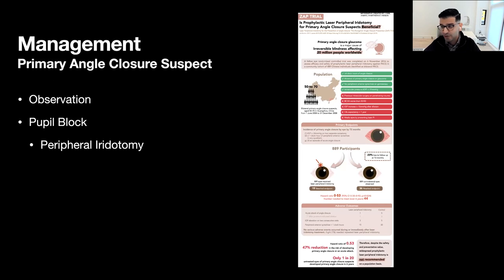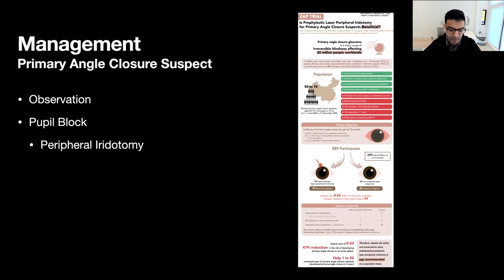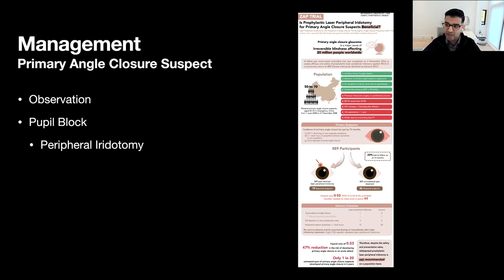If a patient presents with PACS secondary to pupil block, it's very reasonable to consider observation or laser peripheral iridotomy, especially if there are other risk factors such as family history, contralateral PACG, or other considerations. This is really where the conversation with the patient becomes so important.